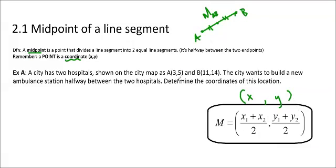So a city has two hospitals, shown on the city map as A(3,5) and B(11,14). We don't actually need the map because we have the coordinates, so they want to build a new ambulance station halfway between the two hospitals. Halfway tells us it is midpoint, so determine the coordinates of this location. So all we have to do is plug it into the formula.